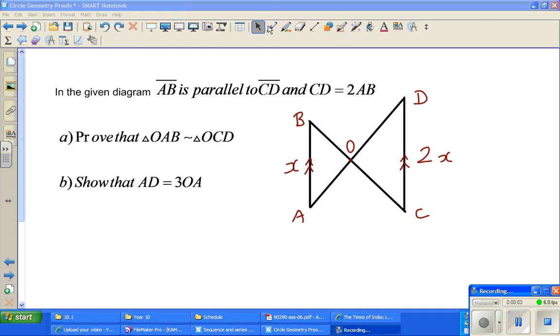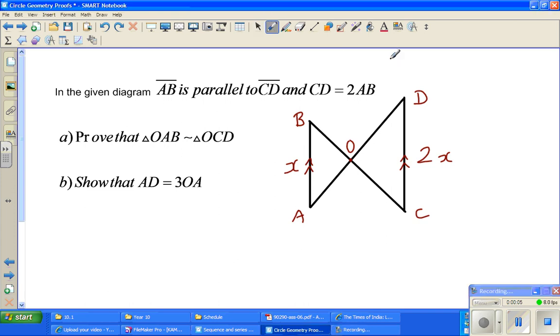In this video, I'm going to prove a result in geometry. It's a very simple proof. What is given: AB is parallel to CD, and CD is twice AB. That's why I have taken AB as x and CD as 2x.